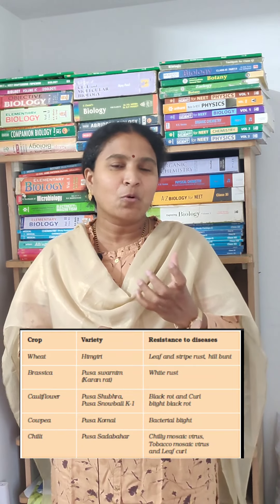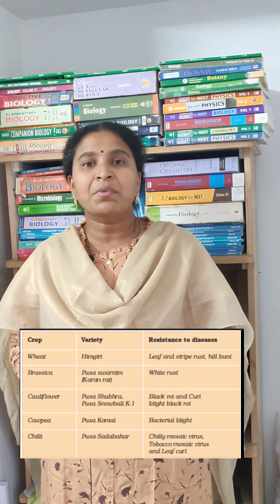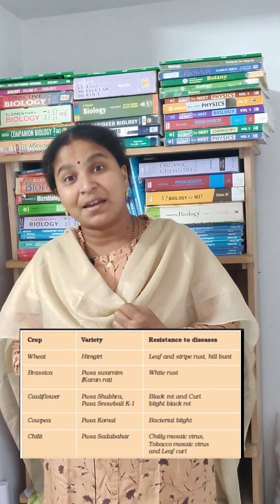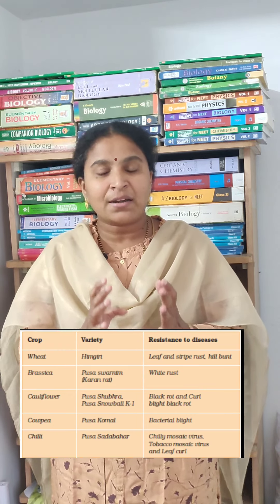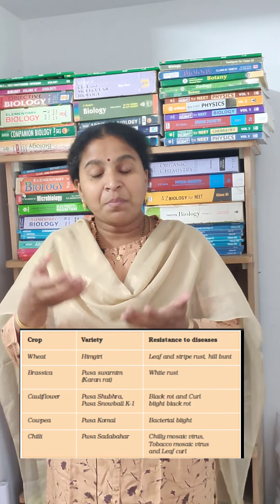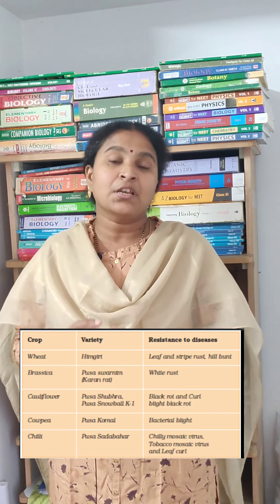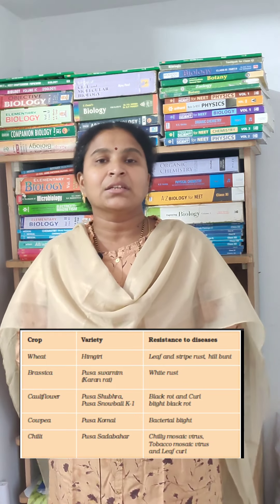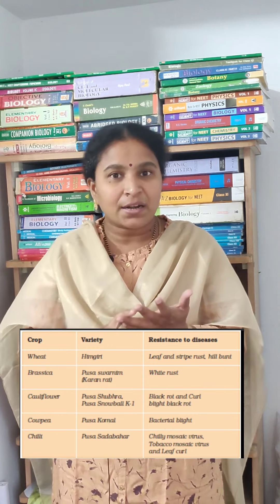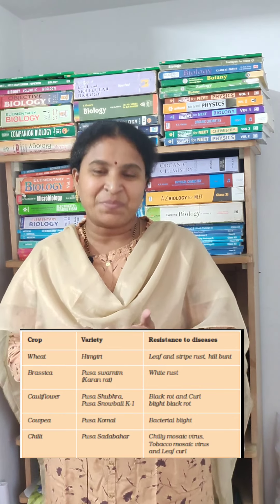The second one is brassica. If you have seen brassica flowers, they will be golden in color. So like that, you can remember the brassica variety name is Pusa Swarnim. Albigo causes disease in brassica leaves — albigo means white color rust — so the brassica variety Pusa Swarnim shows resistance against white rust.